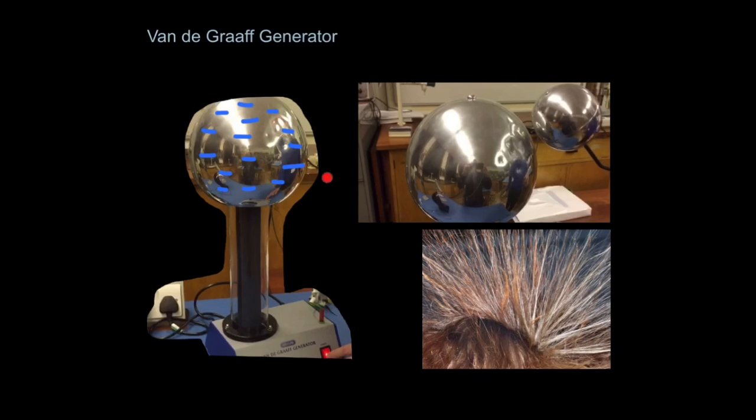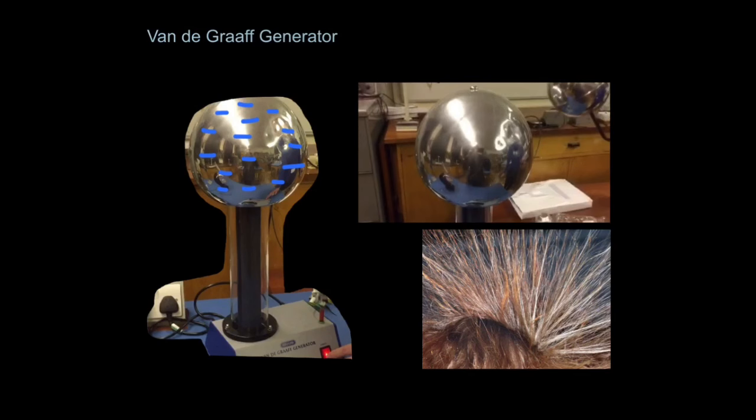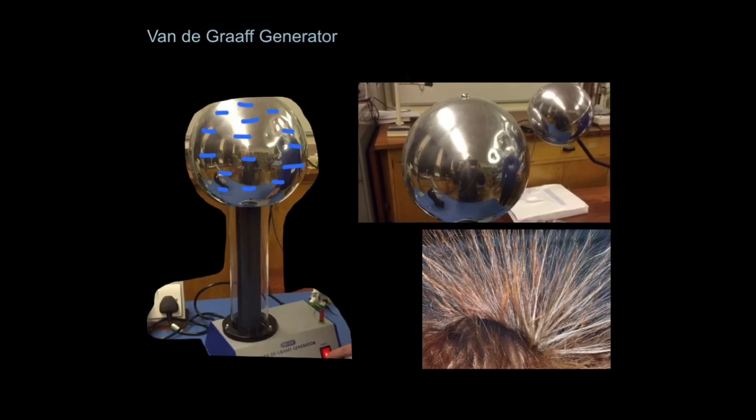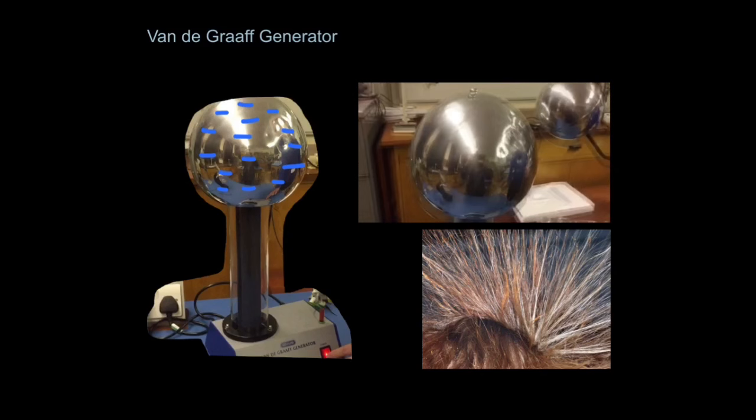If we can hold a conducting material near this dome, these electrons will leap to that conducting material. For example, this thing here is attached to an earth wire and will offer a pathway down to the earth. This is why you see these sparks appear between the two objects as these electrons move from one object to the other down to earth.